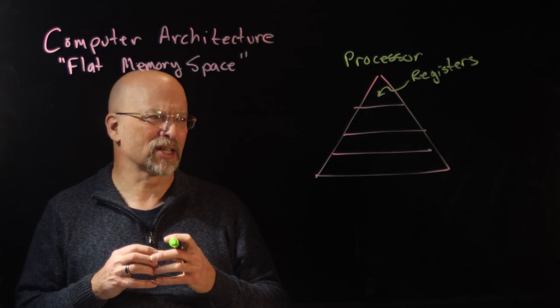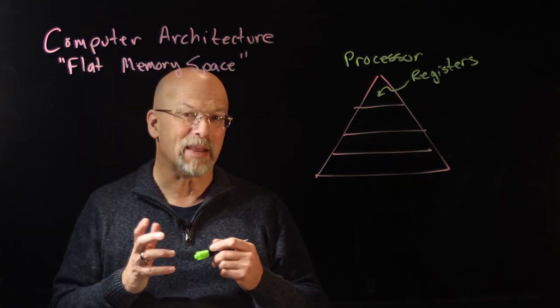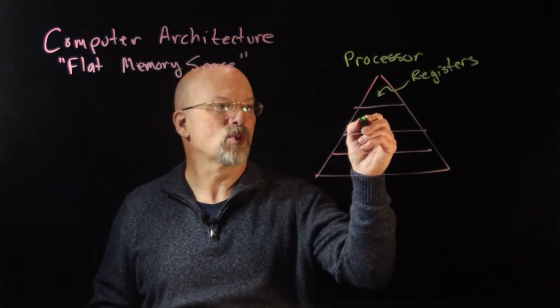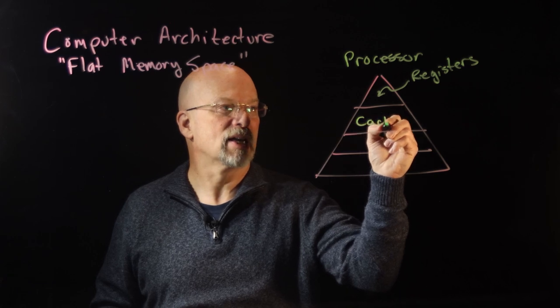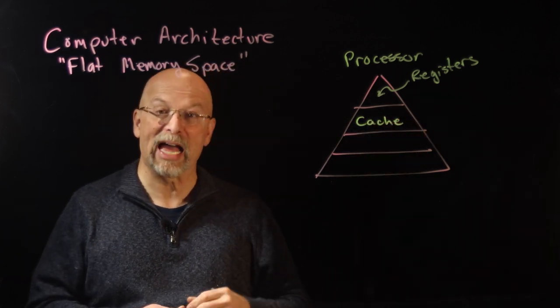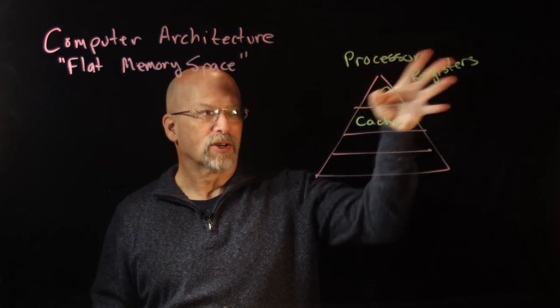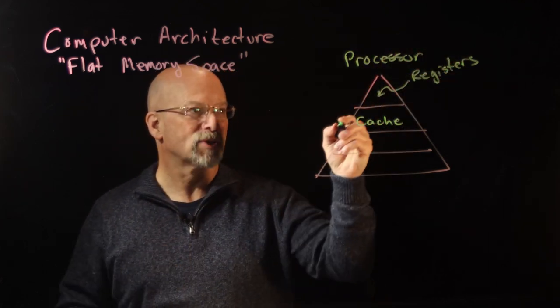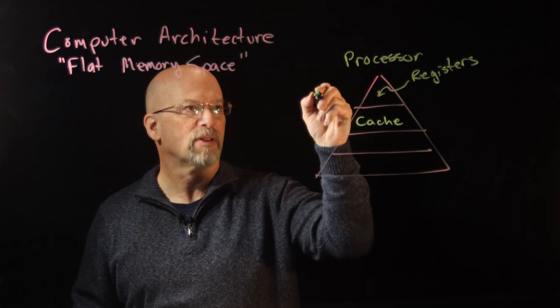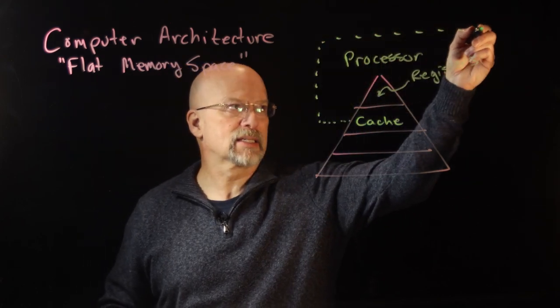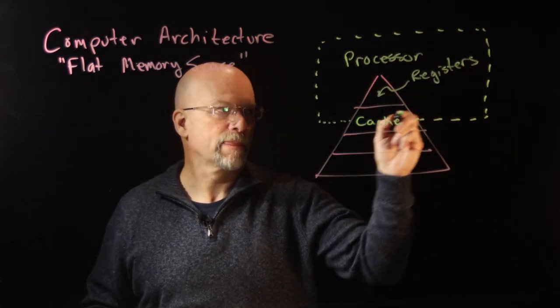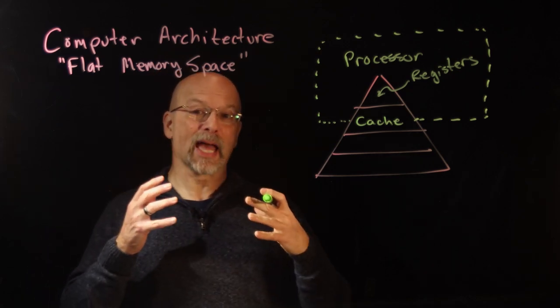We need to have something that's really fast, a memory that's really fast but kind of close by. That's still going to be inside the processor and incredibly fast—that's where we have at this next level what we call a cache or a RAM cache.